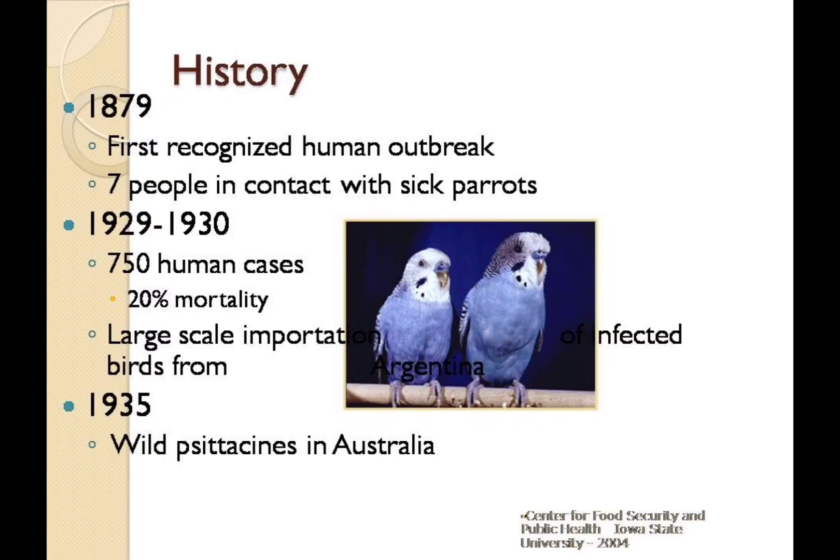In 1879, Dr. J. Ritter was credited with the recognition of the first outbreak of human psittacosis. He had seven ill patients who had a history of recent contact with sick parrots. The greatest epidemic occurred in 1929–1930 and resulted in 750–800 sick humans. This outbreak was attributed to large-scale importation of infected exotic birds from Argentina to Europe and to the United States. There was a 20% mortality rate associated with those outbreaks.